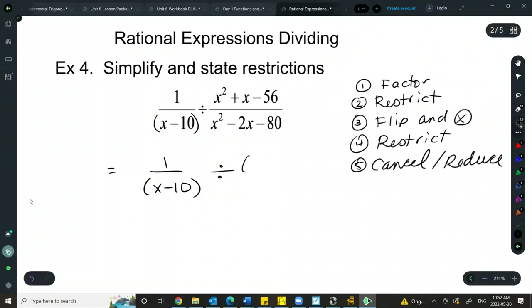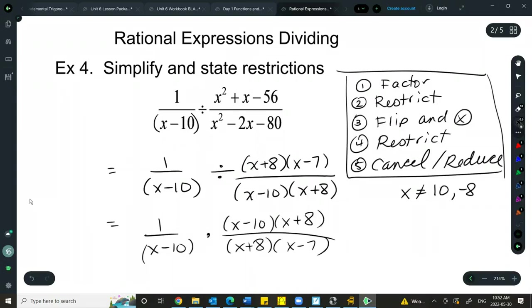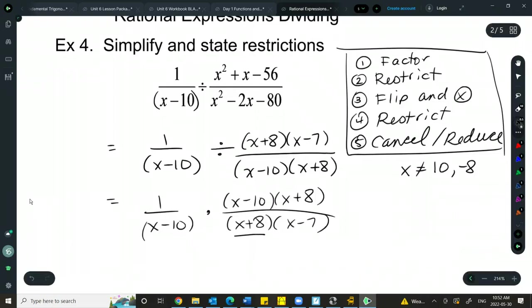Okay, so multiplies to negative 56 adds to positive 1. I believe that would be 8 and negative 7. And then multiplies to negative 80 adds to negative 2. Should be negative 10 and positive 8. Restrictions, x cannot equal 10 and negative 8. Then we'll flip and multiply. So you only flip the second fraction when you flip and multiply. The first fraction will stay as is. And when I do that, I now have new expressions in the denominator that must be restricted. So this already is restricted, negative 8, but this one has a new restriction of 7 that I must add to my list.